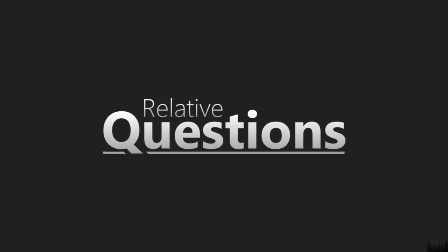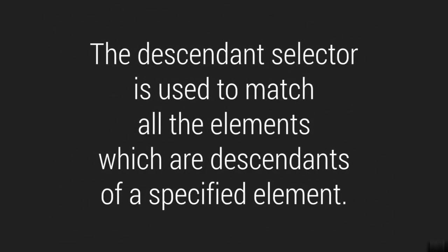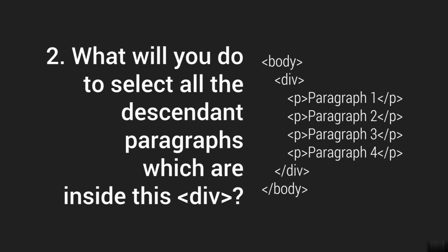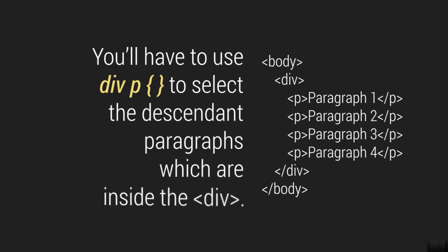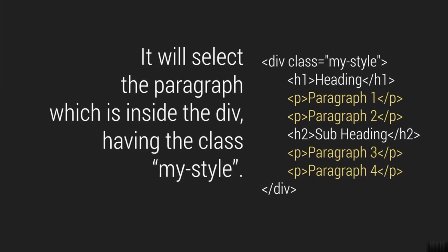The descendant selector is used to match all the elements which are descendants of a specified element — just like a parent-child relationship. What will you do to select all the descendant paragraphs which are inside this div? You will use div then the paragraph with a space — that is to select the descendant paragraphs inside the division. And the syntax div.my-style space p will select the paragraph which is inside the division having the class myStyle — so only these paragraphs are selected but not the h1 or other elements.